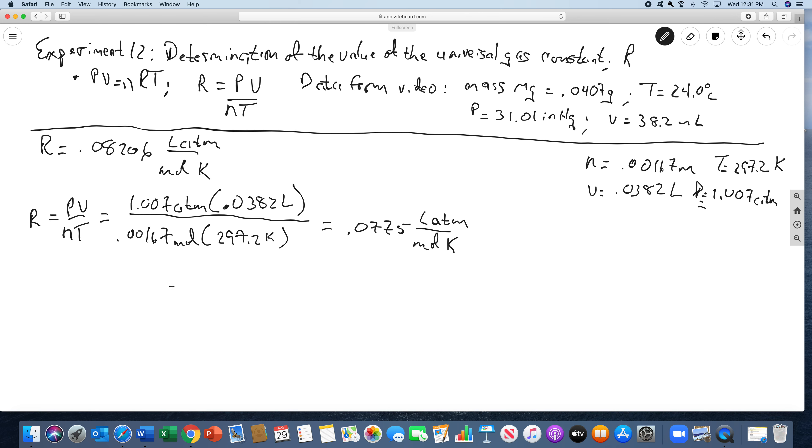Then you're asked to calculate the percent error, which you've done a million times. It's the observed value, 0.0775, minus the actual value, 0.08206, over the actual value. If you want to follow the sig figs, you have to watch this in the subtraction. So it comes out to be negative 0.0046 over 0.08206 times 100, which means we have negative 5.6% error. Remember, the negative means it's low. So that is a run-through of the calculations.